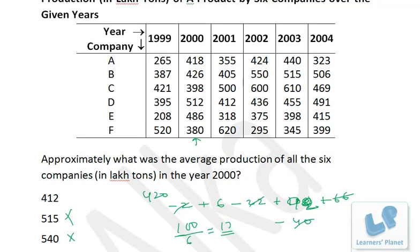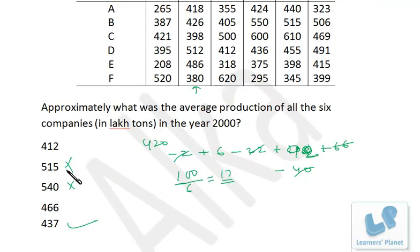Keep this in mind: never copy all the data. Use the assumed mean method to save a lot of time. Also, approximate your calculations since the options give us a margin — here around 30-40 points between choices. Playing with 2 or 3 units of approximation doesn't matter and helps simplify calculation significantly.